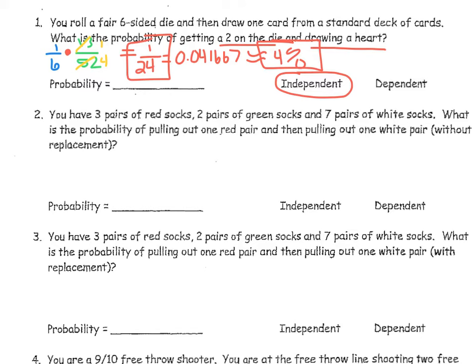Those are independent events. Let's take a look at another example. You have 3 pairs of red socks, 2 pairs of green socks, and 7 pairs of white socks. What is the probability of pulling out one red pair and then pulling out one white pair without replacement? That's the key — when you do not replace the first pair, there are fewer options in the second round. So the probability changes because of what happened in the first event — we call these dependent events.